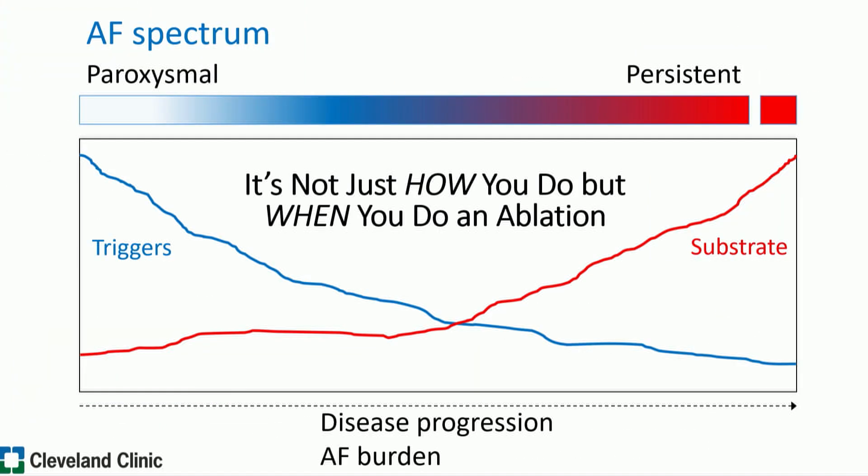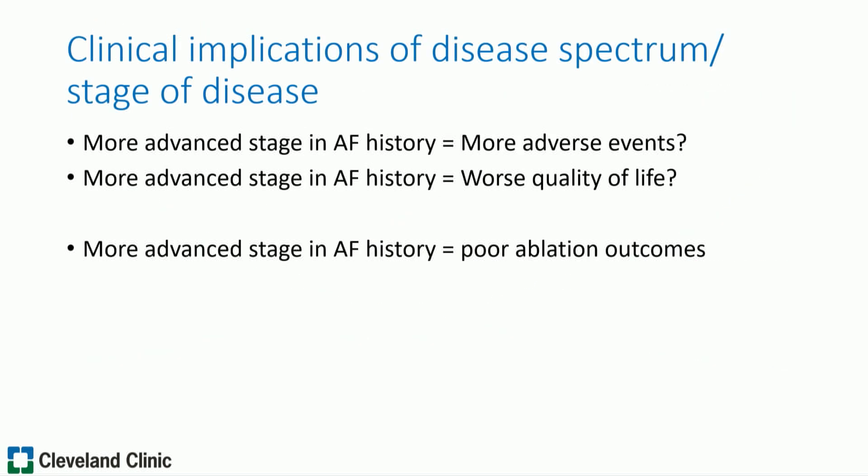AFib is a continuum, and it's not just how you do it, but when you do it. Why is a more advanced stage of AFib history important? Does it matter where you are along that spectrum of illness? The answer is yes. More advanced stages in AFib history mean more likelihood of adverse clinical events, worse quality of life in symptomatic patients, and definitely poor ablation outcomes.